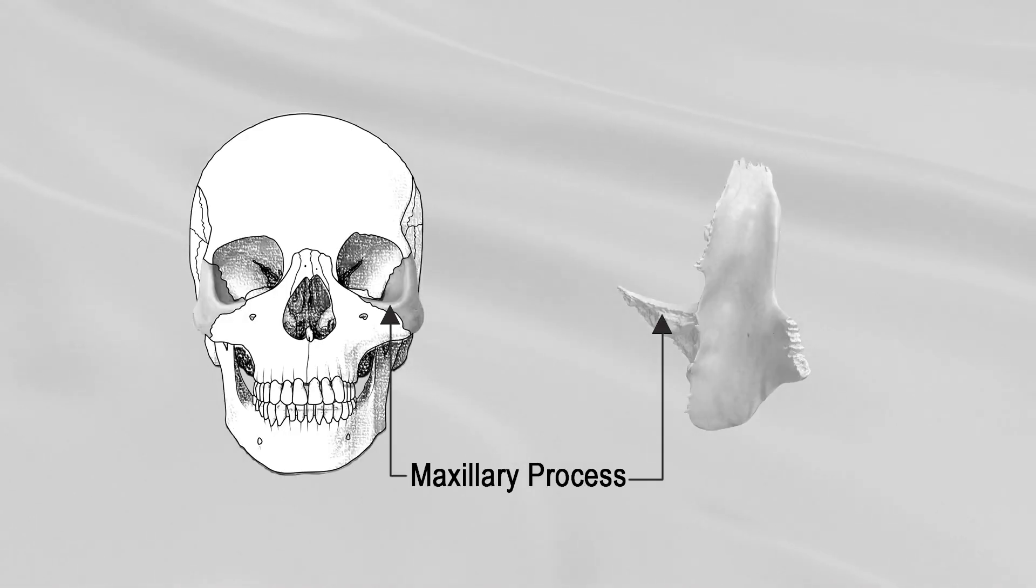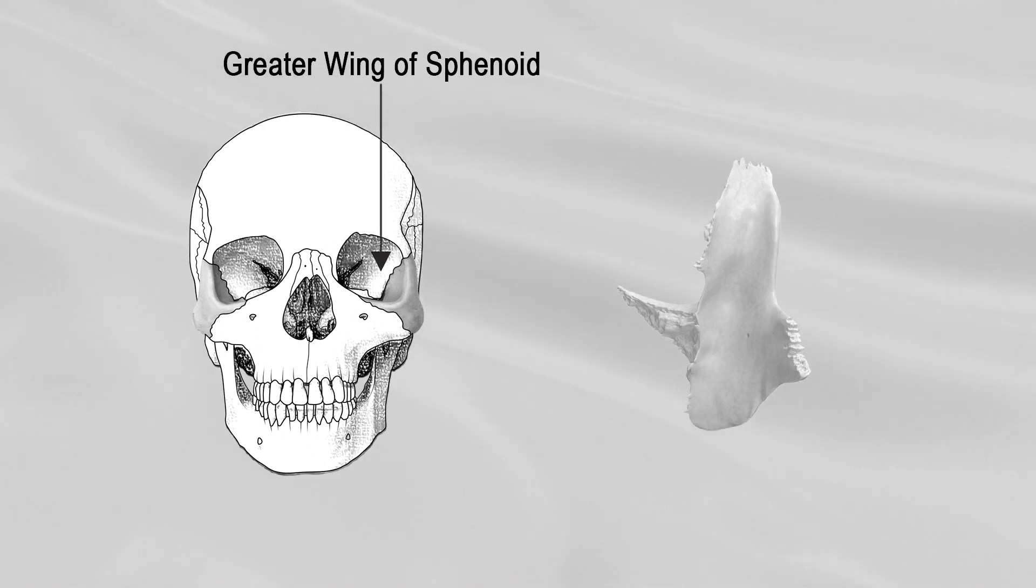Maxillary Process: The maxillary process is a thick, strong plate, projecting backward and medialward from the orbital margin. Its anteromedial surface forms, by its junction with the greater wing of the sphenoid, part of the floor and lateral wall of the orbit.